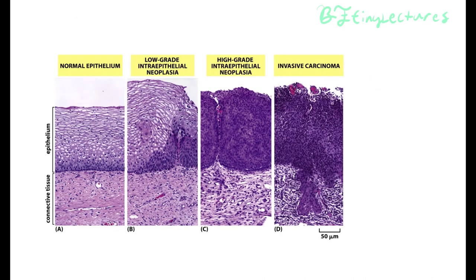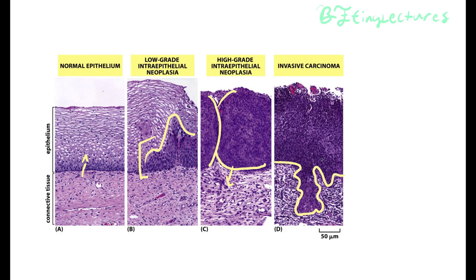Here we see the advancement of cancer. We have a normal-looking cell, then low-grade intra-epithelial neoplasia, where cells start to build up. Eventually the dark purple region takes up the entire space — called high-grade intra-epithelial neoplasia. When this neoplasia starts to leak into the other portion, we call that invasive carcinoma, where the purple region starts to move. This is the beginning of a very, very bad cancer. Now we will watch a video about metastasis and cancer.